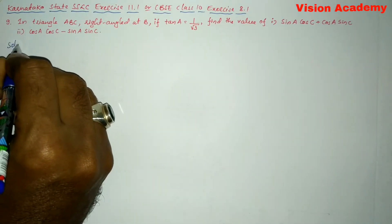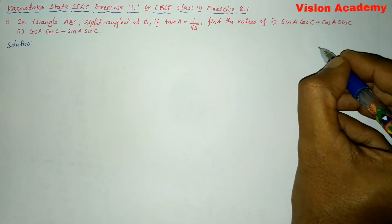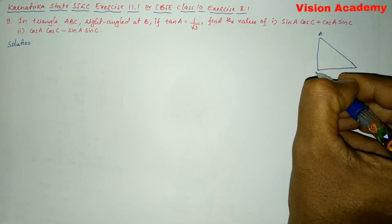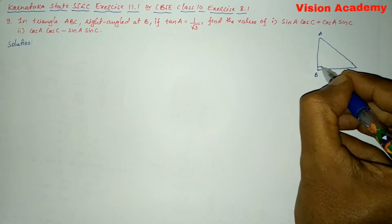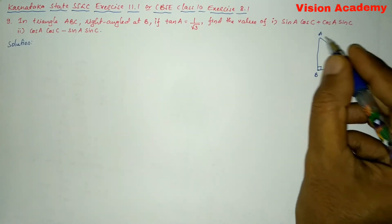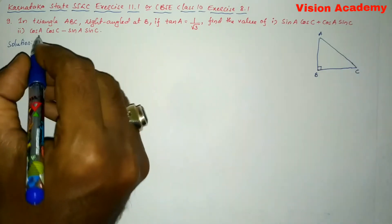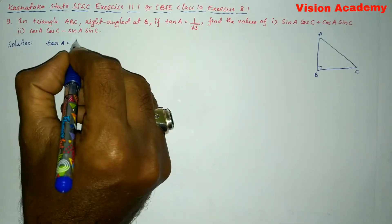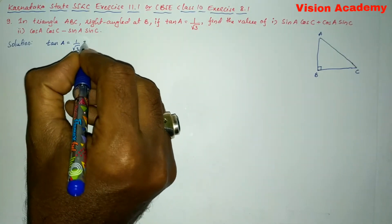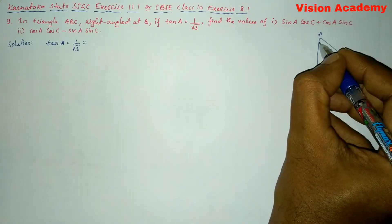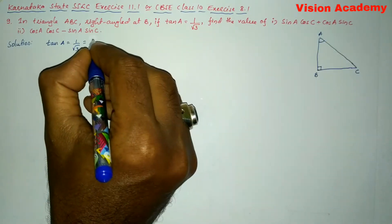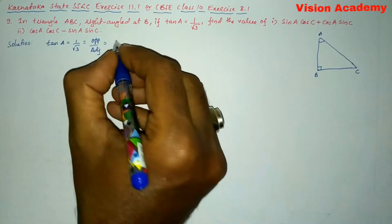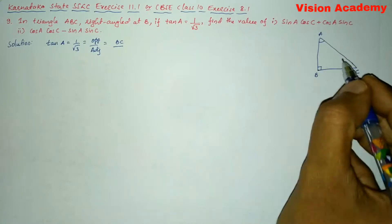So let us find the solution for the given problem. Let us draw first a right angled triangle. Here B is right angled, and ABC is the right angled triangle. In the question they have given tan A is equal to 1 divided by square root of 3. Tan A, taking this angle, is opposite by adjacent, so opposite is BC and adjacent is AB.